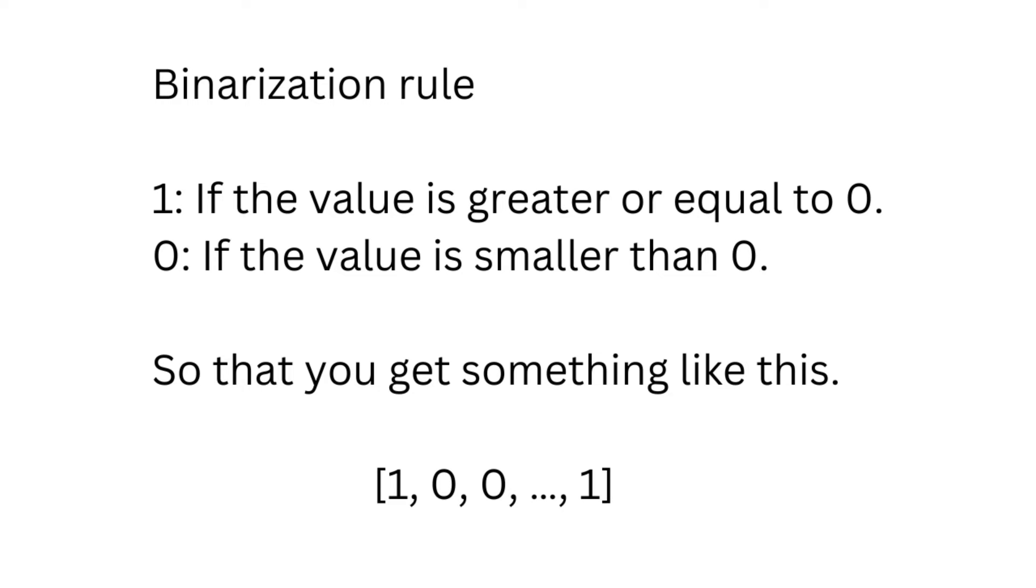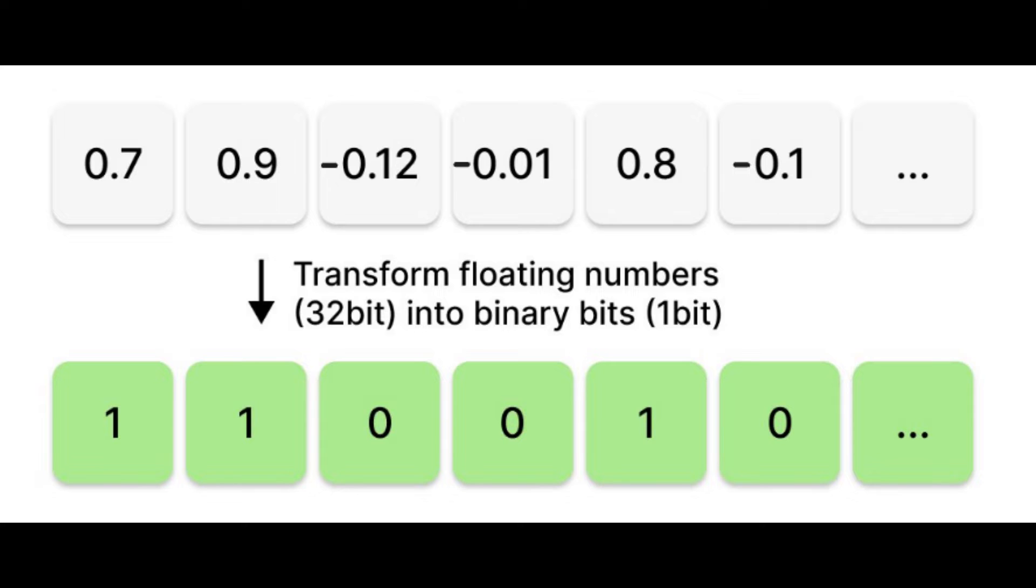So basically, why does binary quantization reduce vector embedding size so much? It's kind of like turning a colored image into a black and white image by converting the floating point numbers, which are stored in 32 bits,